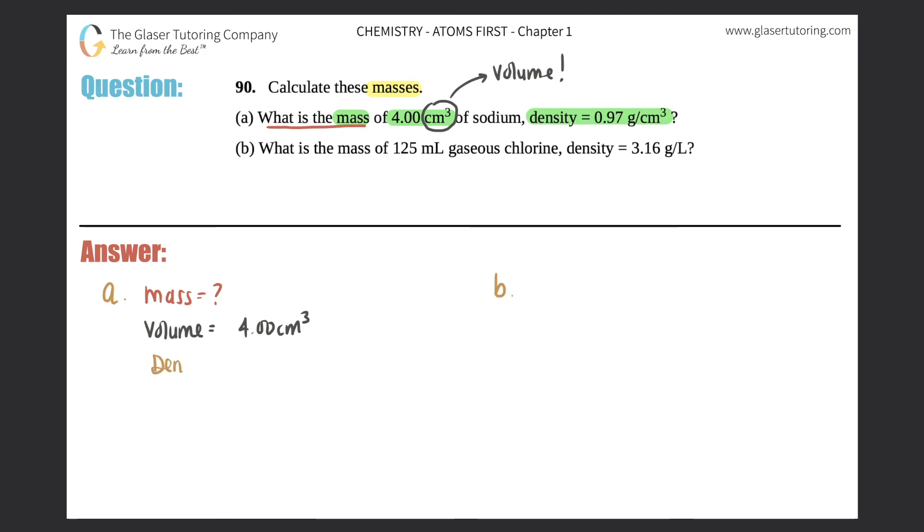And they told us the density, right? So density equals 0.97 grams per centimeter cubed. So I got the density, got the volume, looking for the mass.